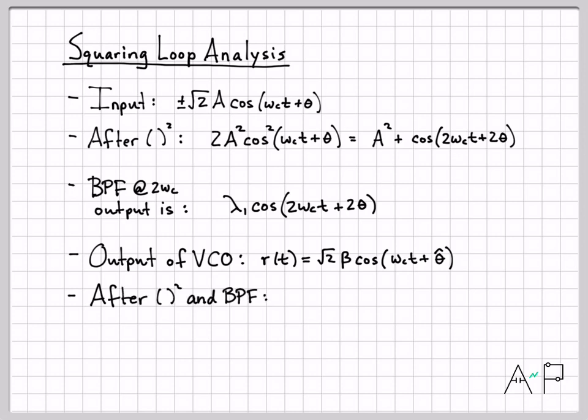So we're going to take that and trace it in that feedback path around up towards the mixer. R of t went through its own squaring and its own bandpass filter. So you can kind of see what's going to happen. A very similar thing here happens that did up here. We square it and then we use our trig identity. Then we run it through the bandpass filter. So what ends up coming out has a very similar form here. The only difference being it's cosine 2 omega ct plus 2 theta hat.